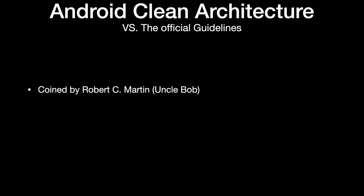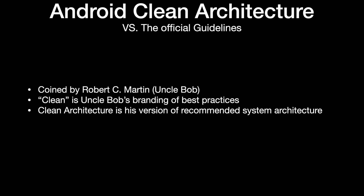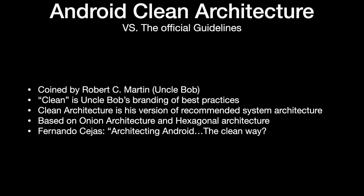With all that, Uncle Bob's branding is on his take of best practices, and when it comes to app architecture, clean architecture is Uncle Bob's proposed application architecture. It should be mentioned that this is not completely different from things that were proposed before him. Clean architecture takes elements from two other major architectural approaches: the onion architecture and the hexagonal architecture. As far as I know, clean architecture first appeared on the Android community's radar through Fernando Tejas's article named "Architecting Android the Clean Way," presenting an approach based on Uncle Bob's clean architecture applied to Android.